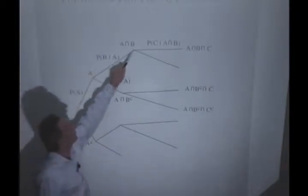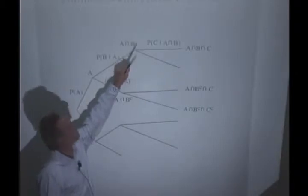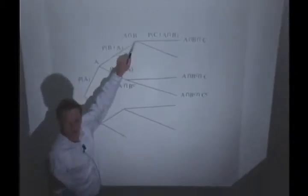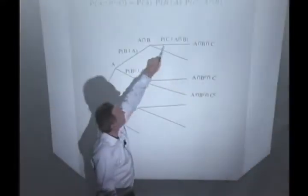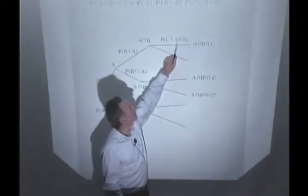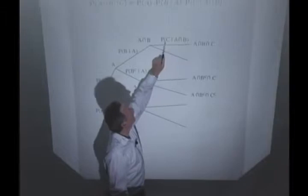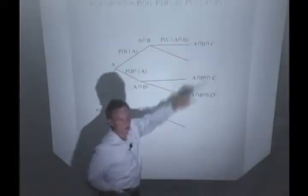Notice what we do along the branch as the tree progresses. Any point in the tree corresponds to certain events having happened. And then, given that this has happened, given that C also occurs.